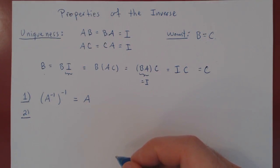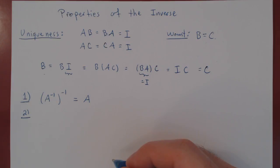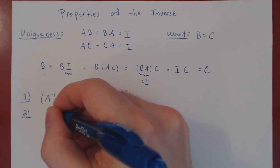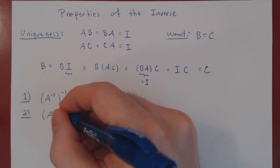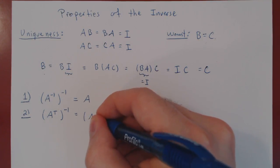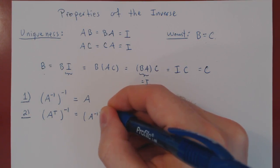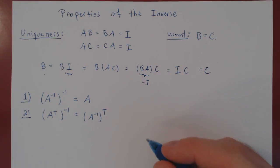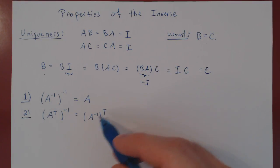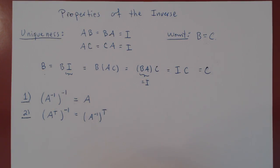Property 2: if A is invertible, is its transpose invertible? Yes — A transpose is also invertible, and the inverse of A transpose is the transpose of A inverse. So if you have found the inverse of A and ask what the inverse of the transpose is, simply take your inverse and transpose it.